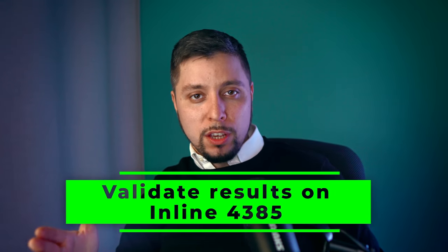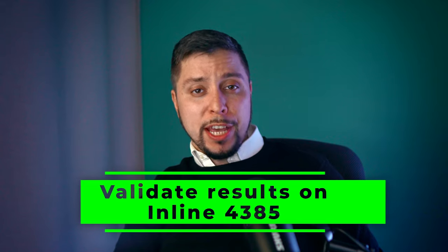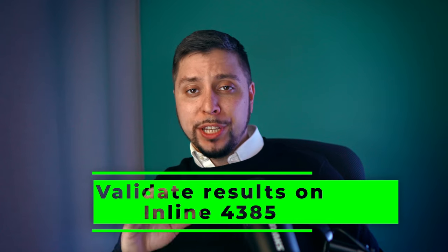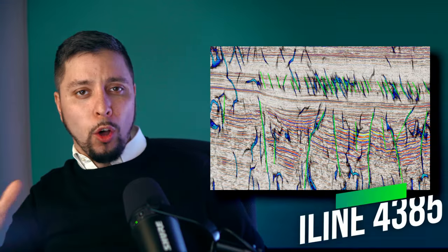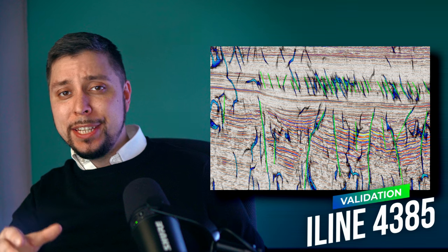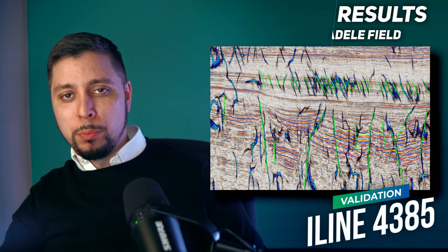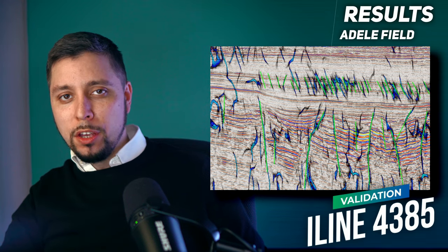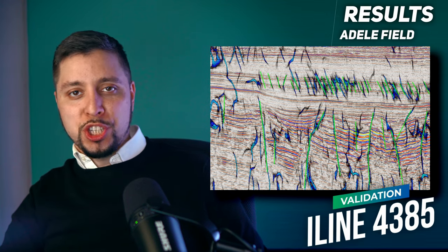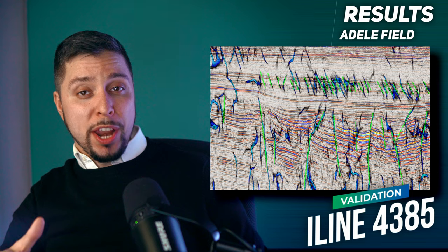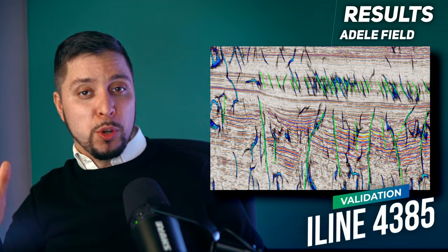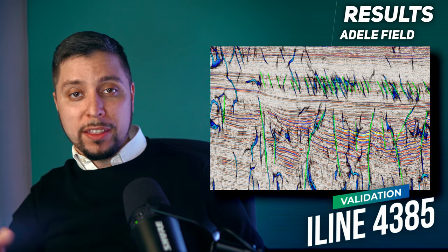The most intriguing part is to see how the network learns to generalize based on one slice in each direction. To determine this, we use validation slices on inline 4385, where we see an almost identical match with the manual interpretation, which assures us that the training process was done right.